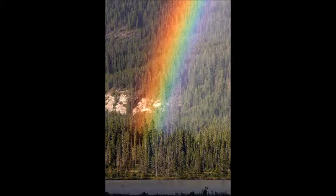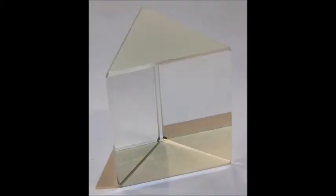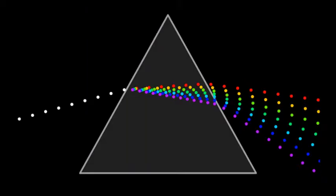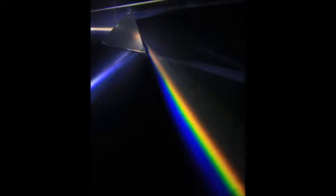Most of us are probably familiar with the triangular prism. The prism operates on the same principle by which rainbows are formed — that is, refraction. Refraction occurs when light transfers from one medium to another medium with a different density, which causes the light to bend. Different wavelengths of light bend at different angles, which is why we see an array of colors exiting the prism.